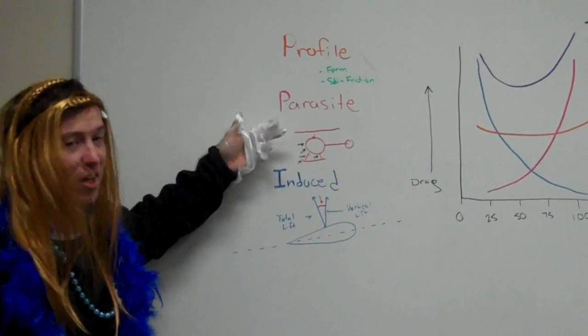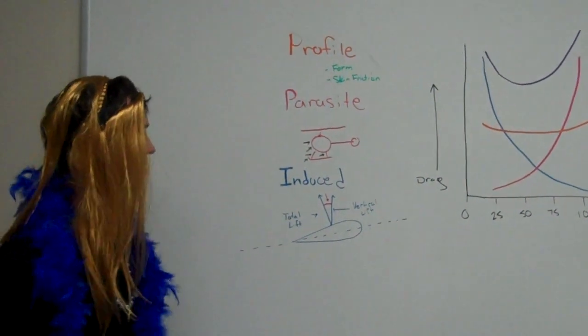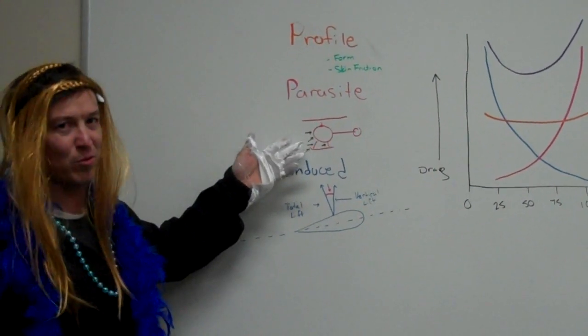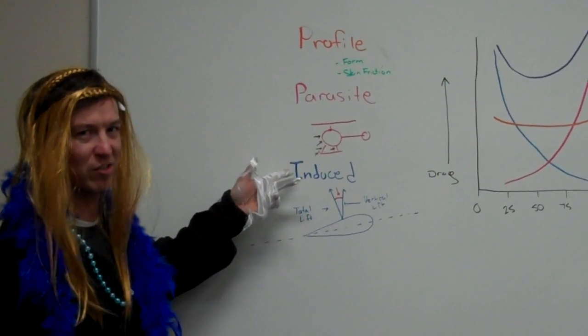Next, we have parasite drag, and this is any type of non-moving object that's on the helicopter. Any non-moving object will deflect the air and cause drag, which is parasite drag.